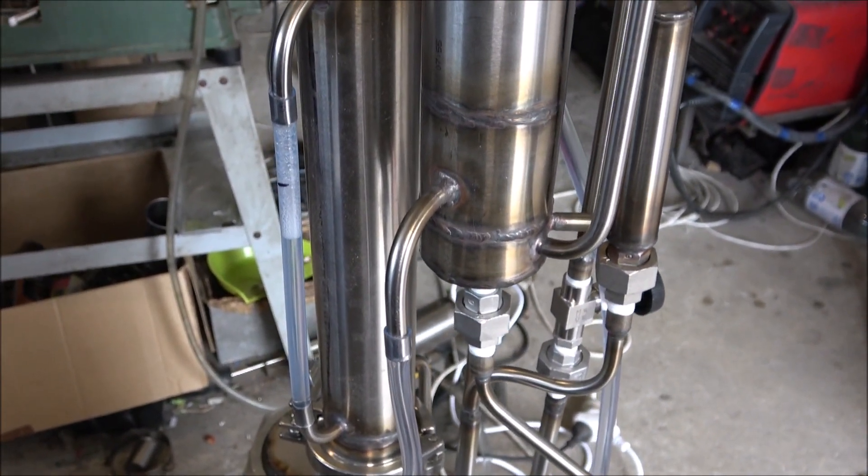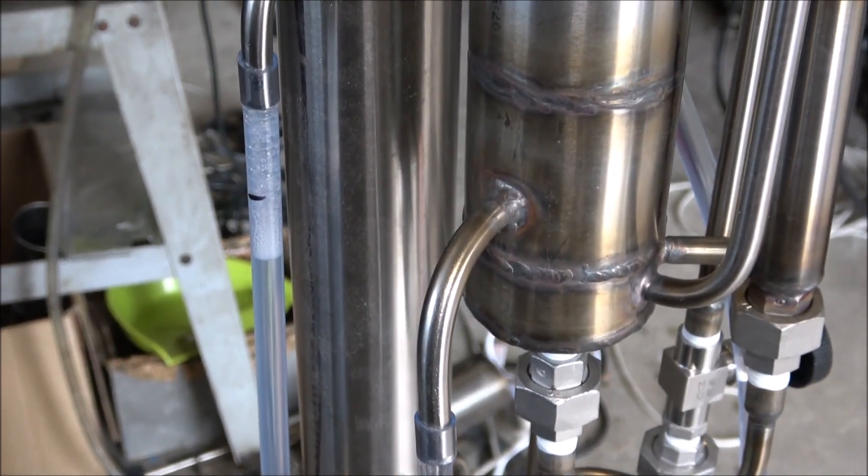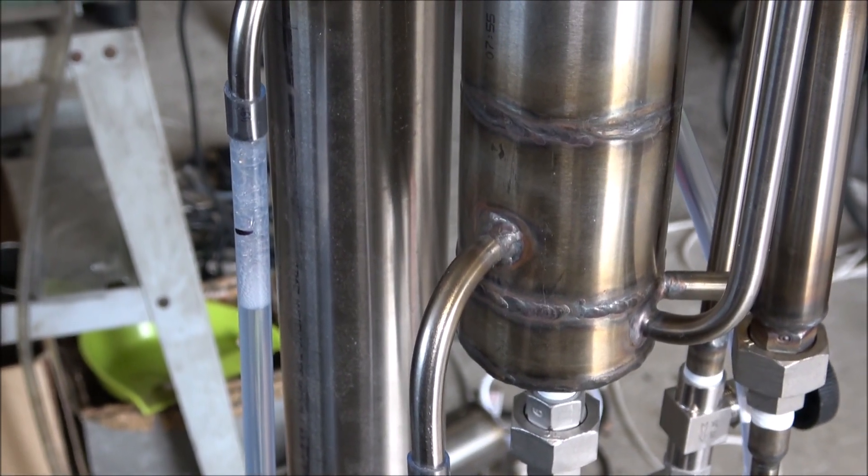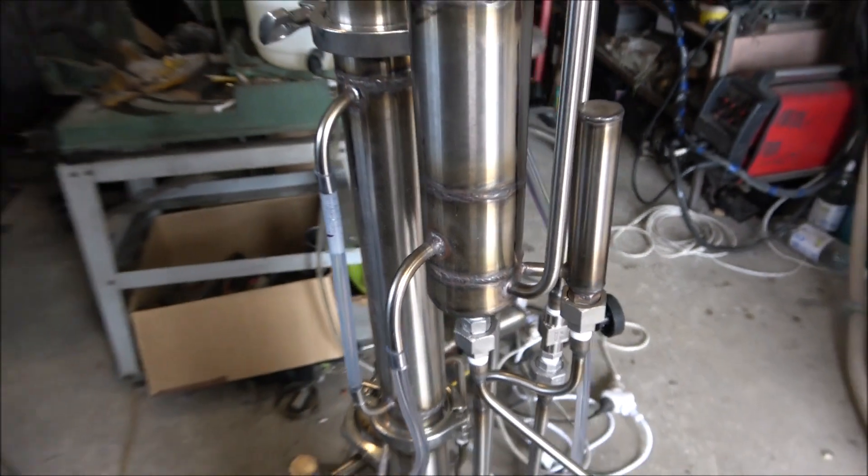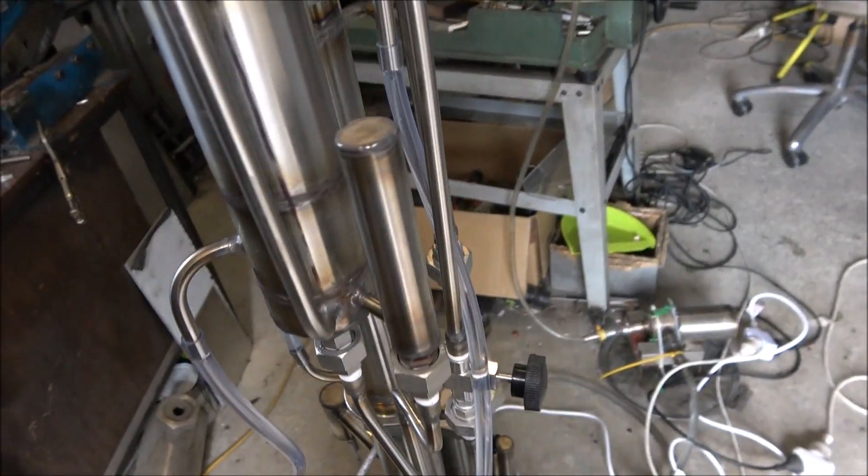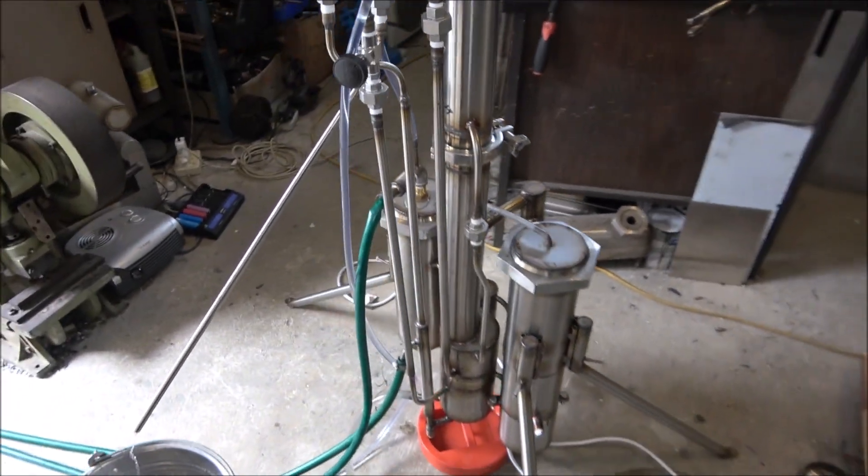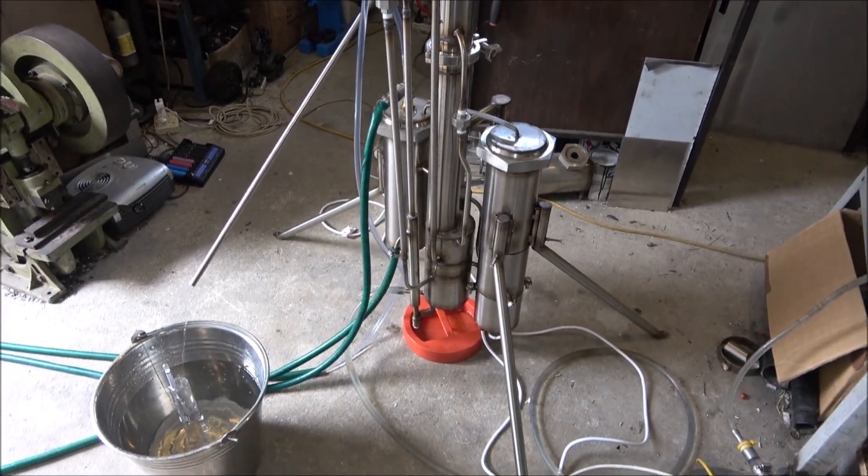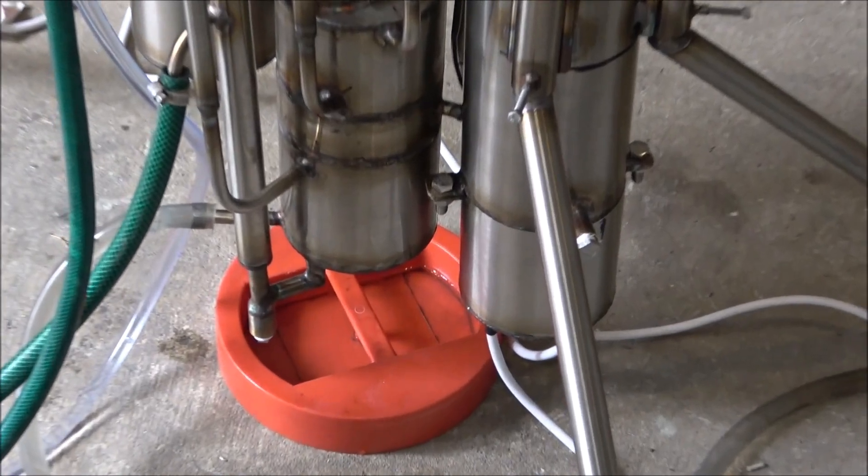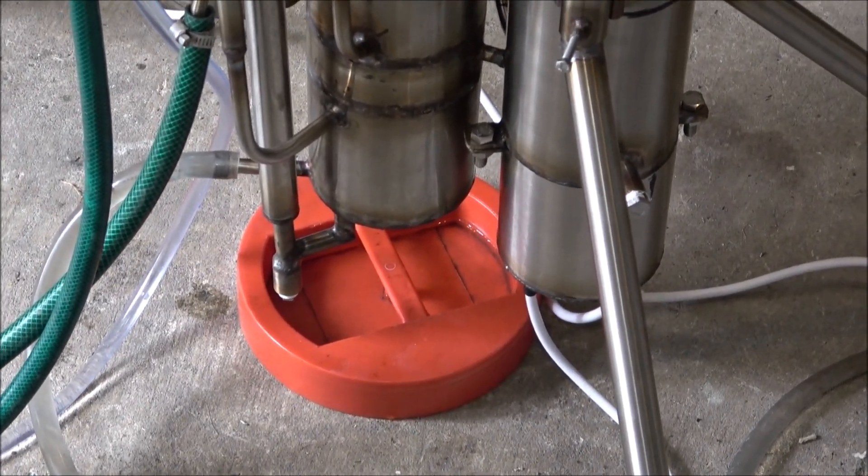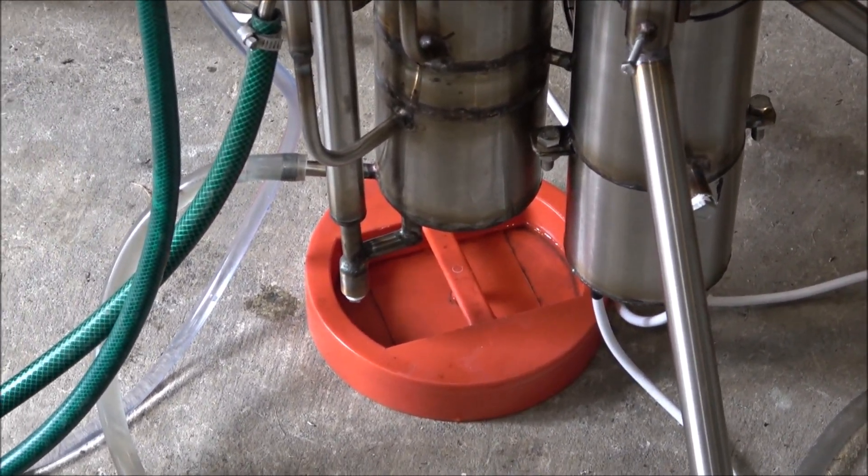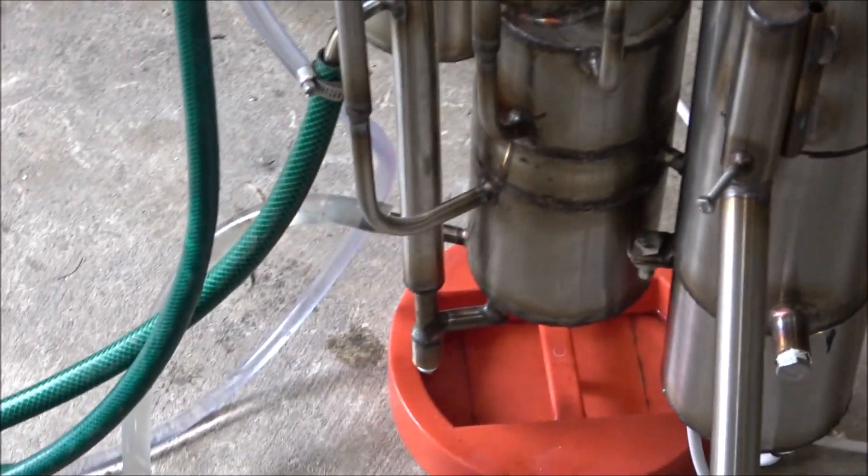Here we've got the level of the wash within the column. Just adjusted it. Still stable, running good without any problems apart from the tiny leak on the rear side, and I'm going to fix it once I finish the distillation.